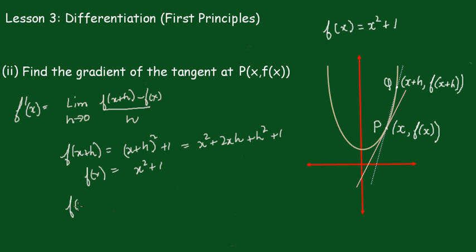Subtracting these two, the x² and 1 terms cancel, and we simply get 2xh + h².